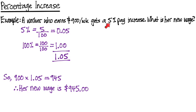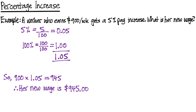If you just worked out the 5%, it would be $45, and that wouldn't make sense if you said her new wage is $45. So it has to be added to the original amount.